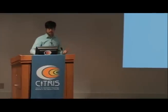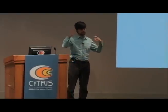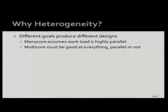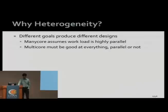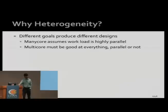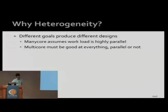Why heterogeneity? Why go through all this complexity? It turns out that different architectural goals produce different designs. If you assume a highly parallel workload, you get much better energy performance by designing simpler cores that take advantage of parallelism, rather than putting many heavyweight cores designed for single-thread performance. Multi-core chips have to be good at everything, whether parallel or not, whereas many-core chips are purpose-built only for very parallel applications.